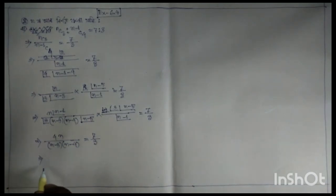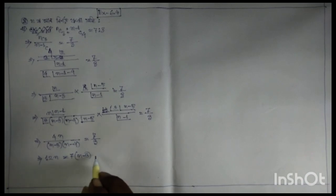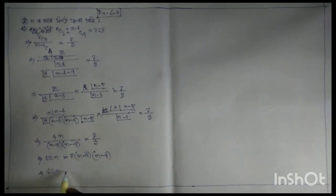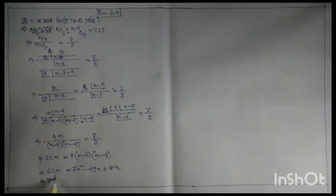Implies 12n equal to 7 into n minus 3, n minus 4, minus 4, minus 4, equal to 0. Implies 7 into n minus 4, minus 4, n minus 4, n minus 4, plus 84 is equal to 0.